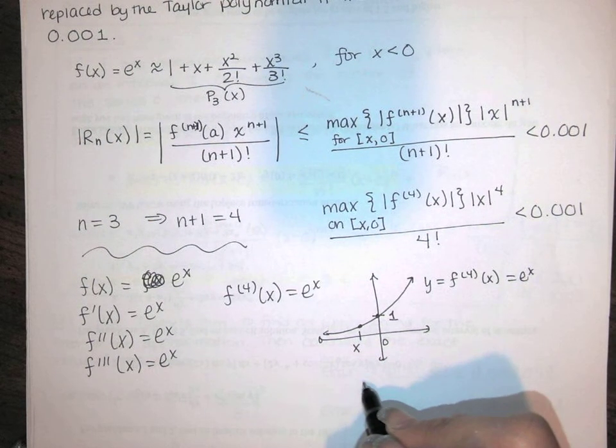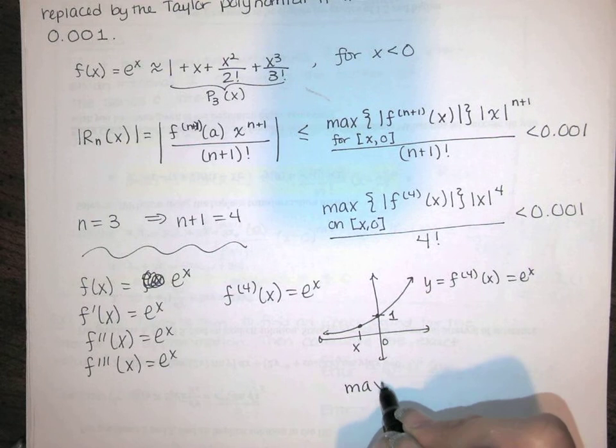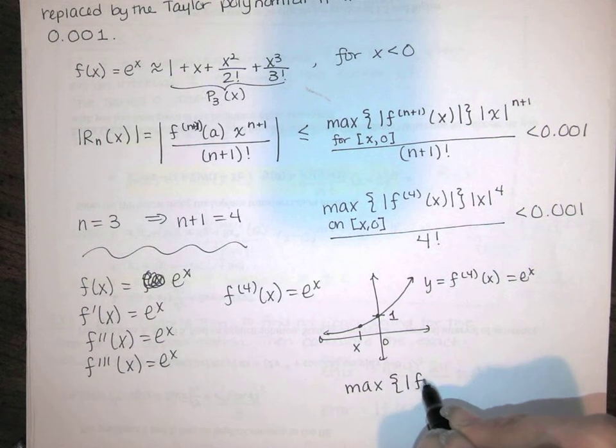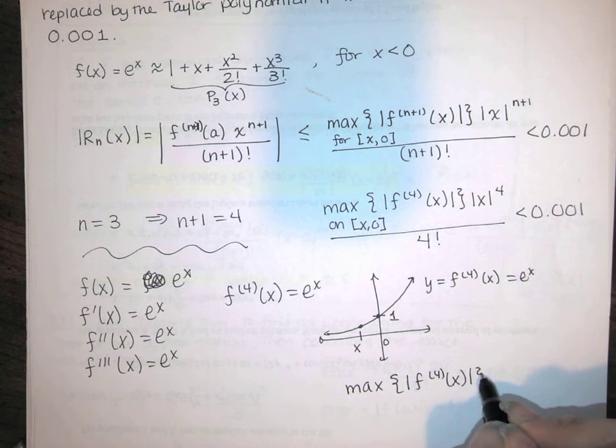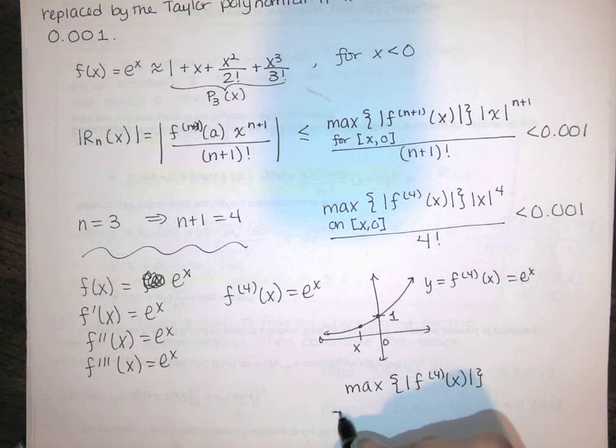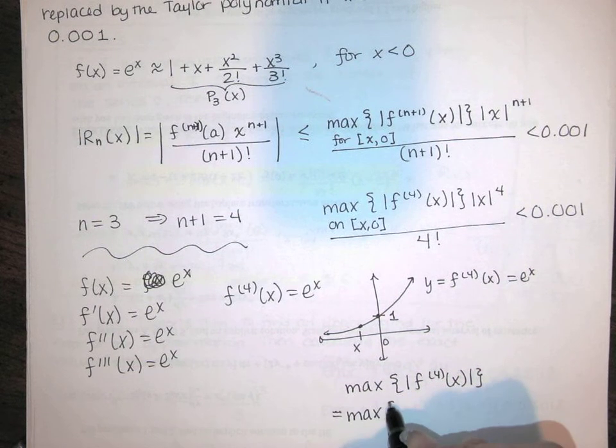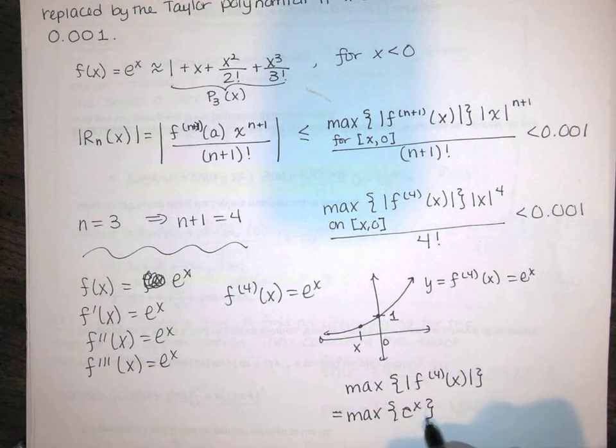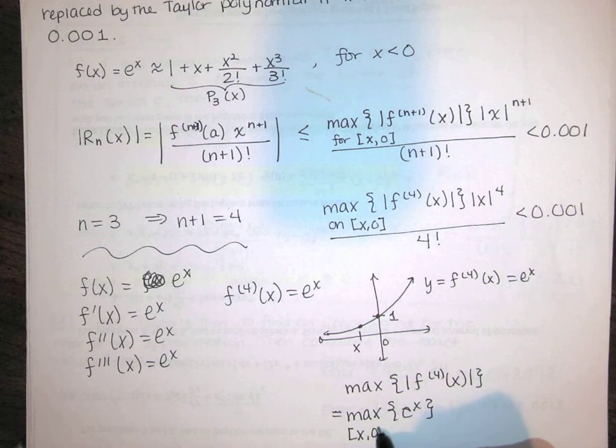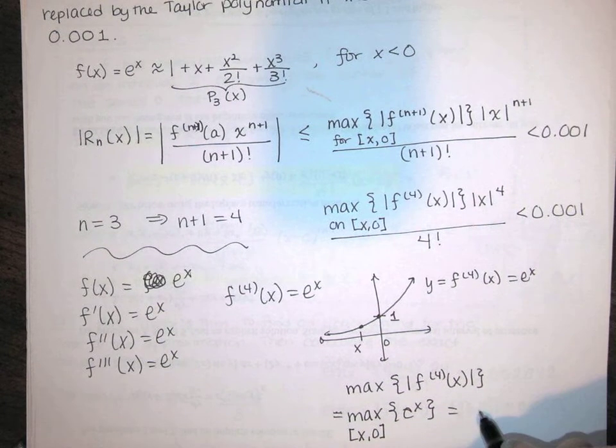So just from this graph, we can say that the maximum value of the absolute value of this, that's the maximum value of e to the x on the interval from x to 0 is e to the 0, which is 1.